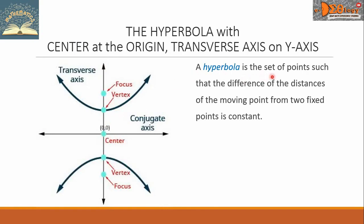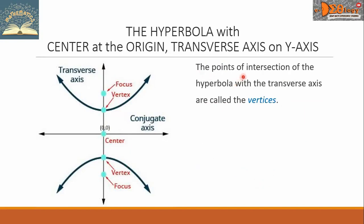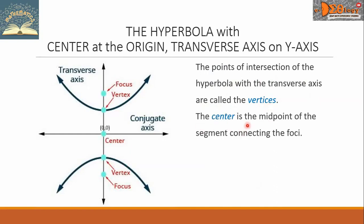A hyperbola is the set of points such that the difference of the distances of the moving point from two fixed points is constant. The fixed points are called foci. The line passing through the foci is called the transverse axis. The points of intersection of the hyperbola with the transverse axis are called the vertices. The center is the midpoint of the segment connecting the foci.